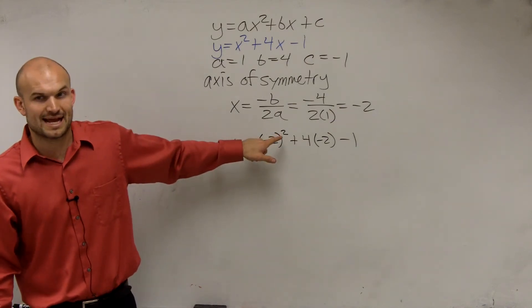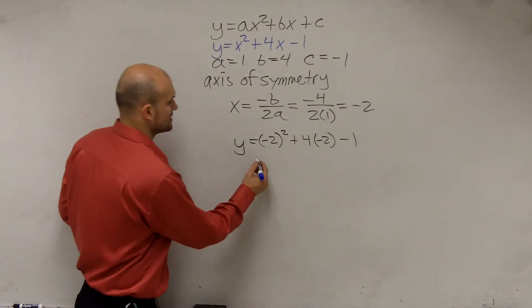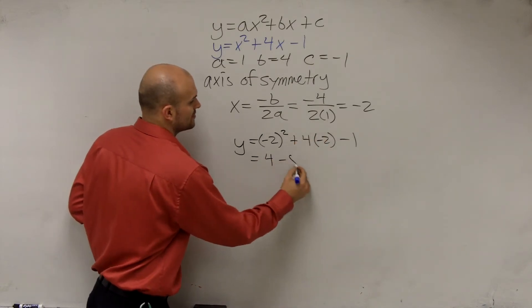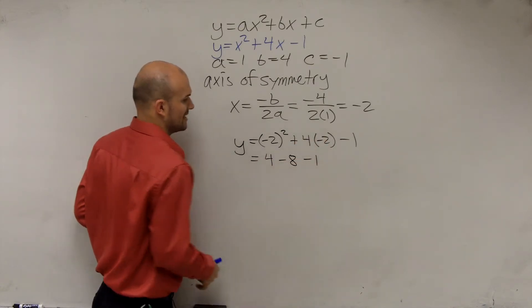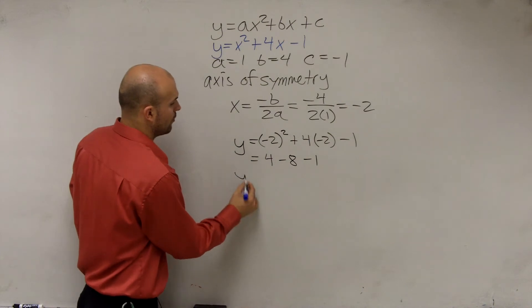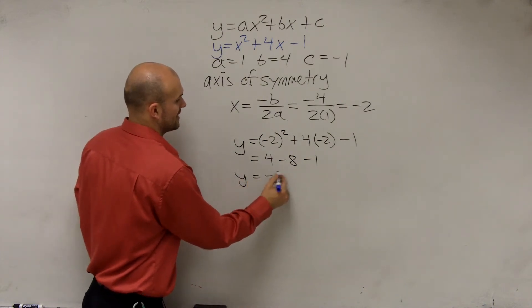Negative 2 times negative 2, which is negative 2 squared, is equal to positive 4. 4 times negative 2 is negative 8 minus 1. So therefore, y equals negative 5.